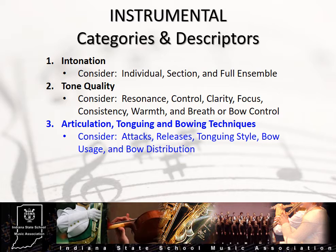Evaluate and offer feedback on how the ensemble's tonguing style and/or bow usage is affecting the clarity and consistency of the articulation style being displayed. Consider also the clarity, accuracy, and consistency of attacks and releases as it relates to ensemble clarity and precision. This is also an important element of Category 3.